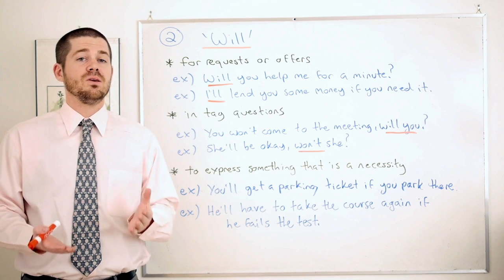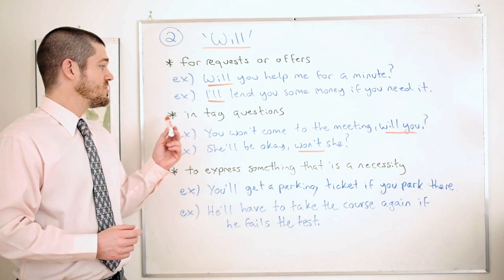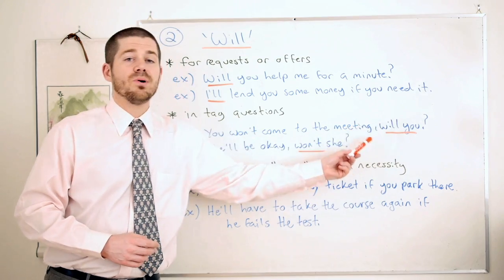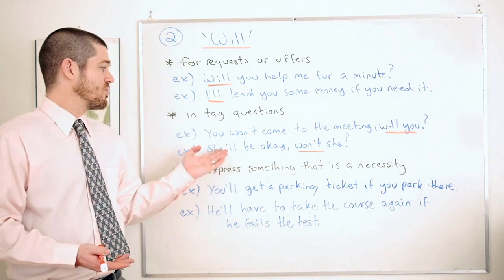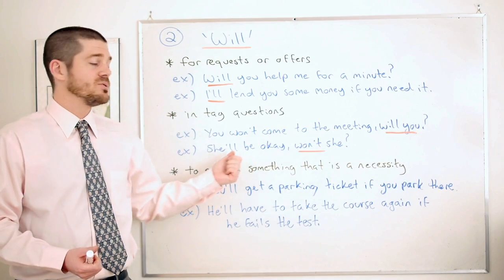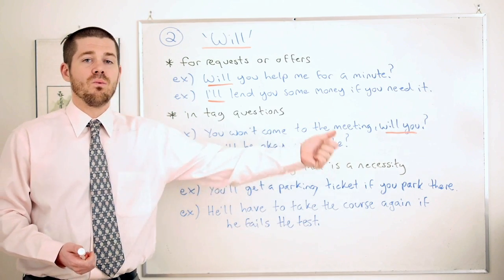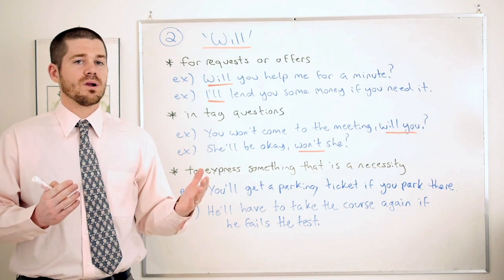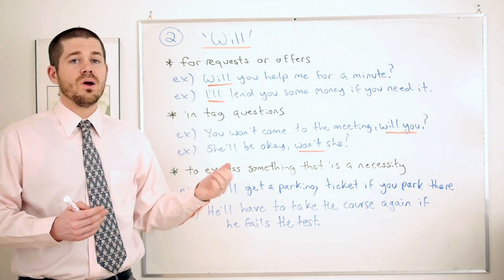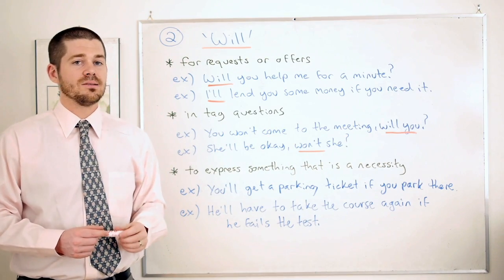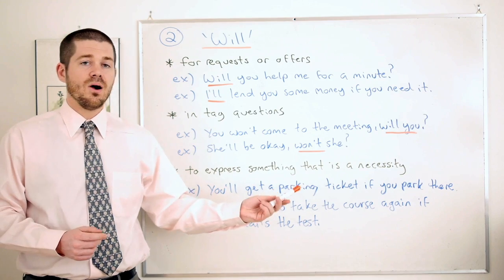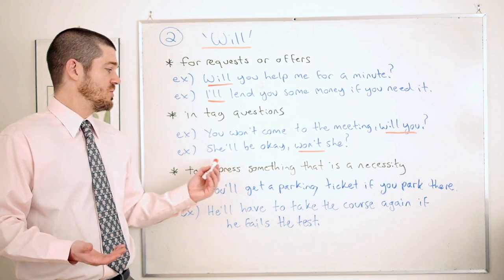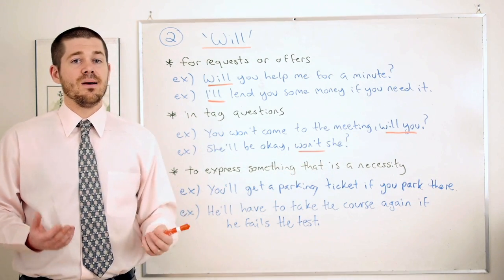Another situation is in tag questions — when you add a little question at the end of a sentence and the grammar matches the beginning. For example: 'You won't come to the meeting, will you?' — 'won't' and 'will you' work together as a set. Another example: 'She'll be okay, won't she?' With 'going to,' we don't use it in the tag question.